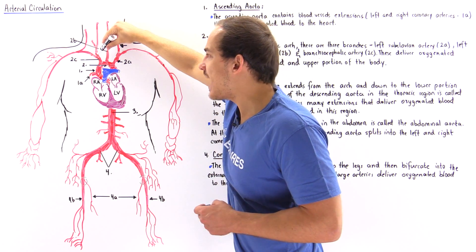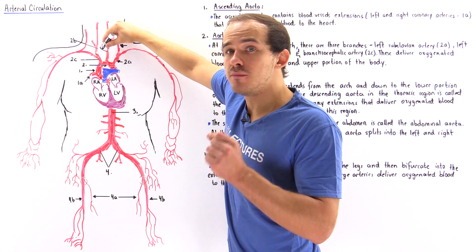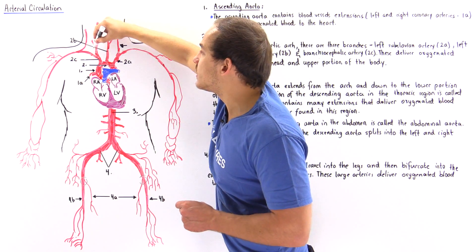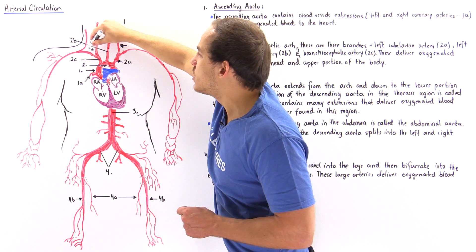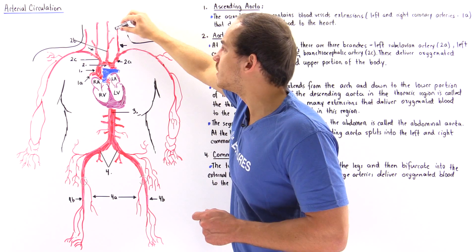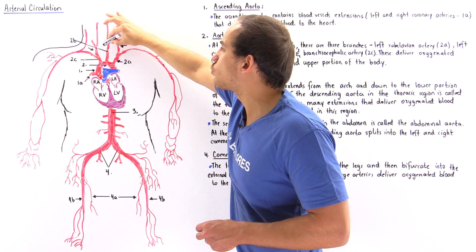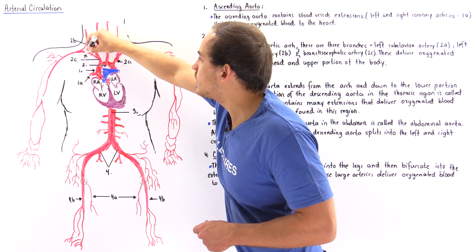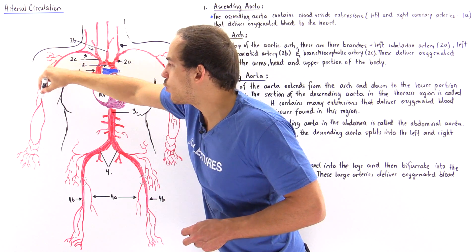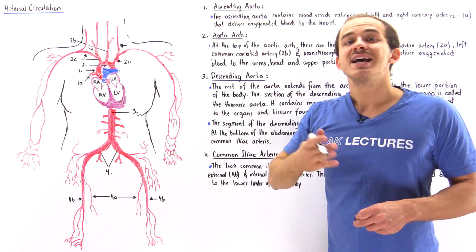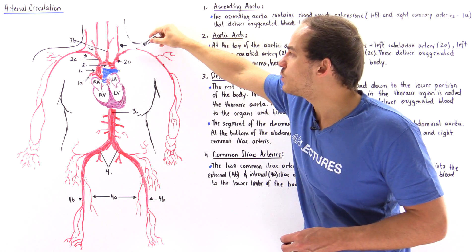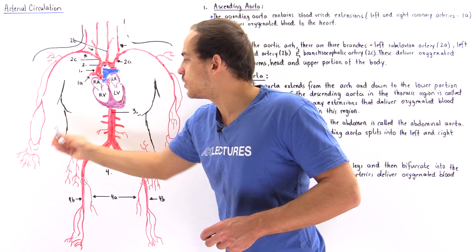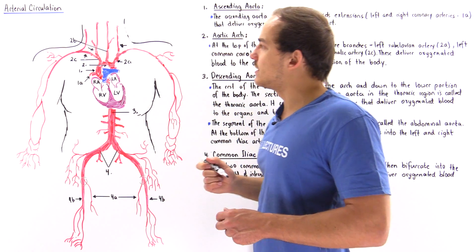One of those arteries is known as our right common carotid artery — so just like we have a left common carotid artery, we also have a right common carotid artery. The other artery extends all the way into the right arm and is known as the right subclavian artery. Just like we have a left subclavian artery, we also have a right subclavian artery that extends into the right shoulder, the right arm, and the right hand.